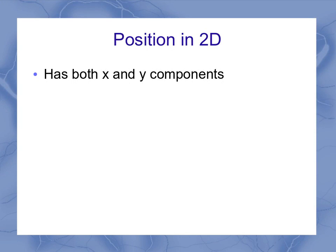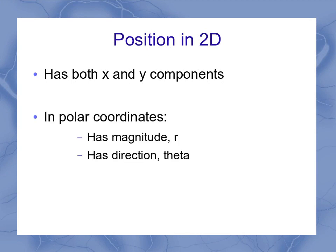In two dimensions, we have x and y at the same time. In polar coordinates, we have r and theta, which represent x and y. But r is the magnitude and theta is the direction.